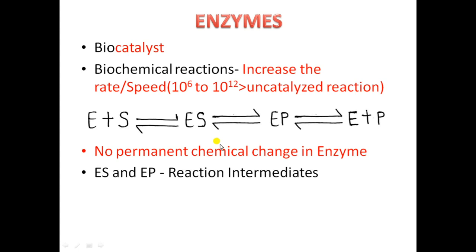There are three steps in this reaction. Between two steps, the substances formed — in this case ES and EP — are called the reaction intermediates.